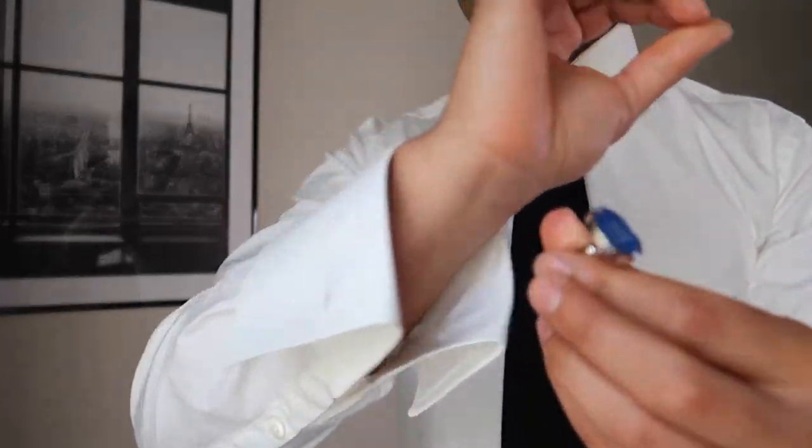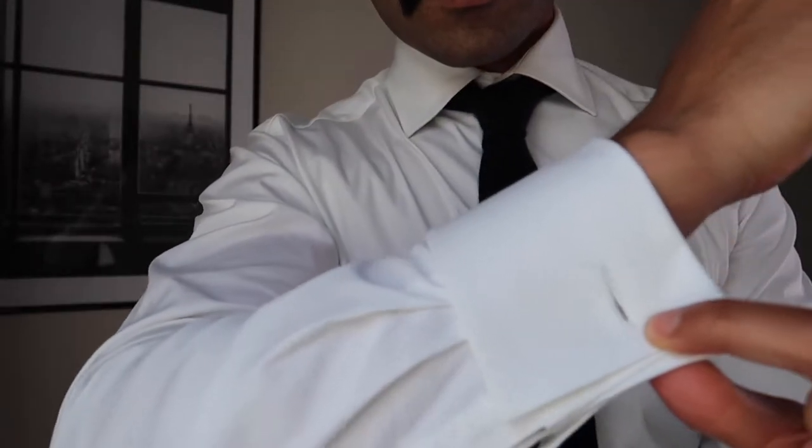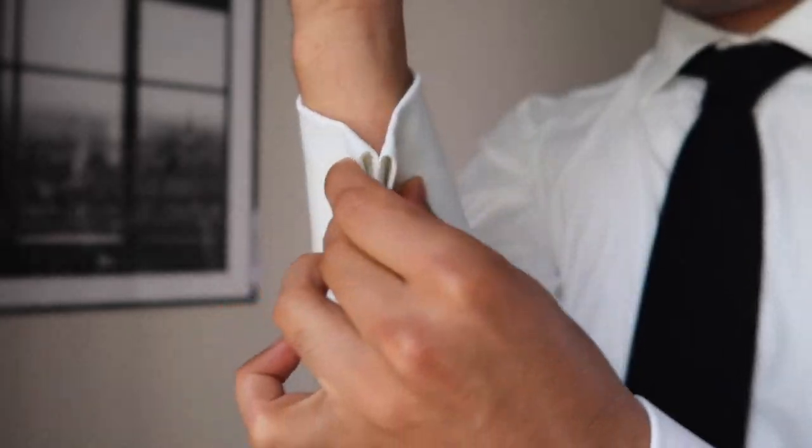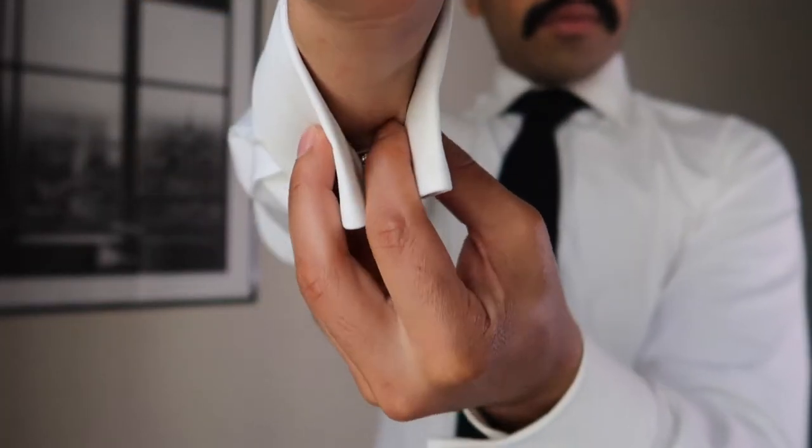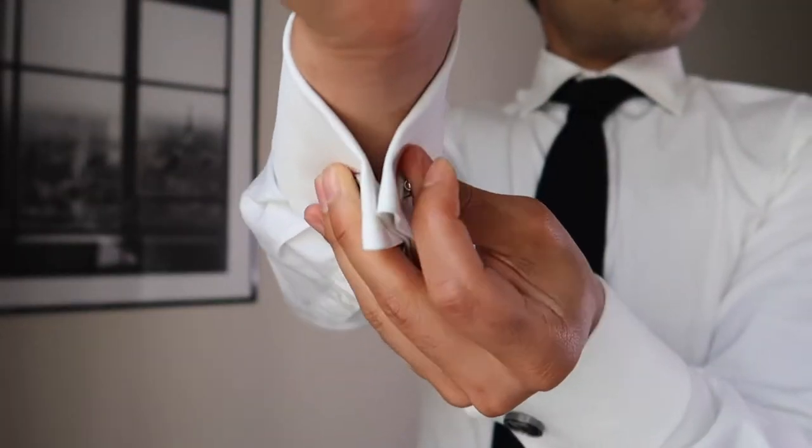There are two alternatives when it comes to wearing cufflinks. First is the kissing style. Pinch the folded cuff around your wrist, then feed the link through all four holes. Secure and adjust.